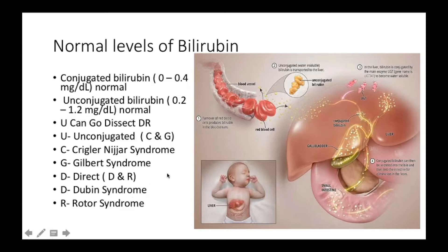When you take U CAN GO, the first three leading letters are in one group. So when we take high levels of unconjugated bilirubin, we have C and G under them — C stands for Crigler-Najjar syndrome and G stands for Gilbert's syndrome. That is to say, Crigler-Najjar syndrome and Gilbert's syndrome are both a result of high levels of unconjugated bilirubin. When you take the high levels of conjugated bilirubin, that's where we have Dubin-Johnson syndrome and Rotor syndrome.